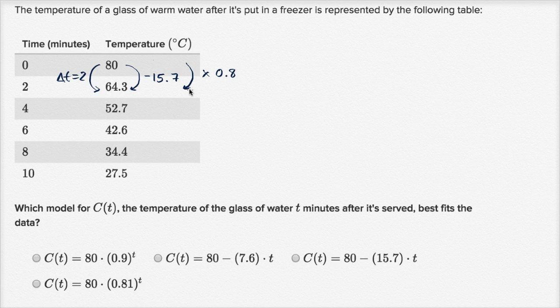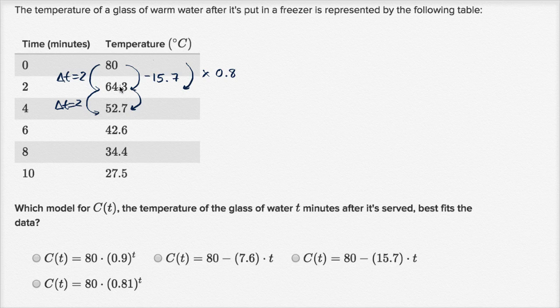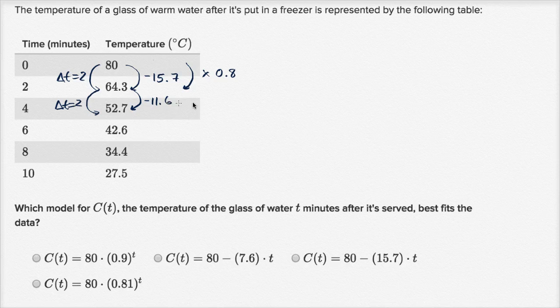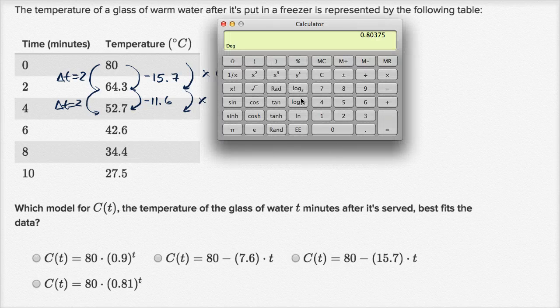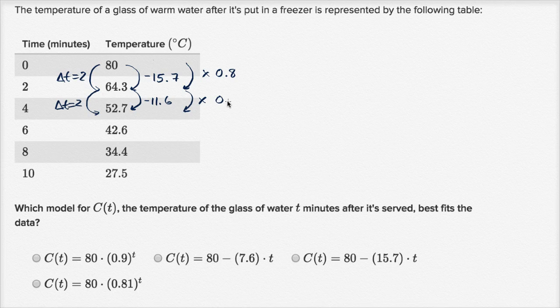Now if I increase my time again by two, I'm going from minute two to minute four, so delta t is equal to two. The absolute change here is negative 11.6. But if you looked at it as multiplying by a factor, what would you have to multiply by approximately? So 52.7 divided by 64.3 is equal to about 0.82. So times 0.82.